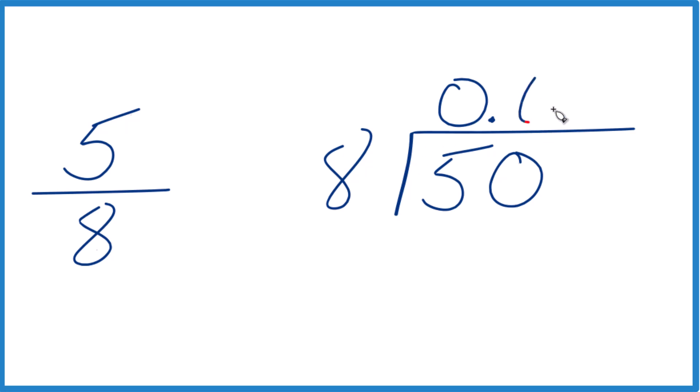So 6 times 8, that's 48. And if we subtract, we get 2. 8 doesn't go into 2. Let's move over 1. We'll call this 20.